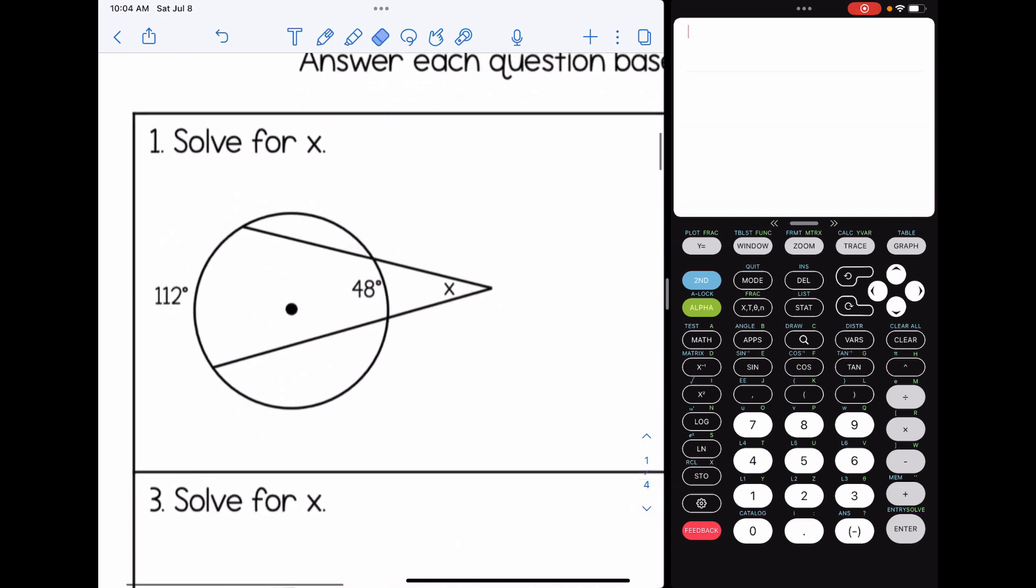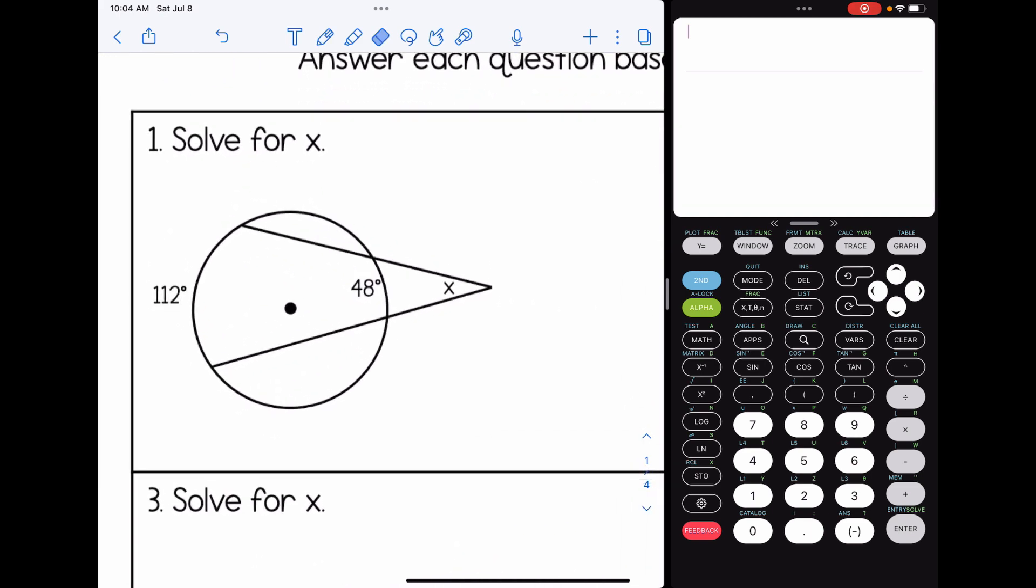Let's take a look at number one. We are asked to solve for x here. We see that the vertex is outside the circle. So we are going to use the rule that we're going to subtract the arcs, and we're going to divide that then by two. So 112 minus 48 gives us 64. We're going to have that, and x is 32 degrees. And again, if you prefer to write it like this, one half, 112 minus 48, that's fine. You could write it either of those two ways.